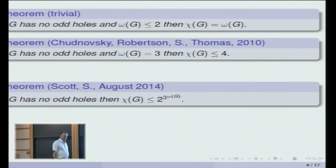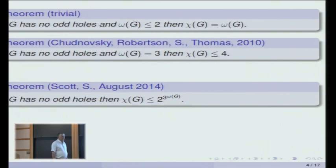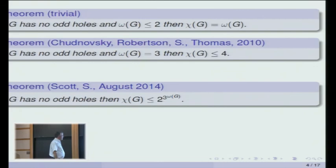As for lower bounds: if the clique number is omega, I can get a lower bound of something like omega to the 1.3 — it's omega to the log 4 over log 3. You take the complement of C7, keep substituting it for its vertices and repeating. The clique number goes up as 3 to the n, and the chromatic number goes up as 4 to the n.